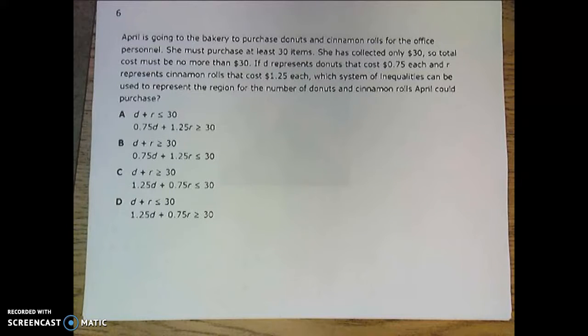Okay, so here's number 6. April is going to the bakery to purchase donuts and cinnamon rolls for the office personnel. She must purchase at least 30 items. She has collected only $30, so total costs must be no more than $30.